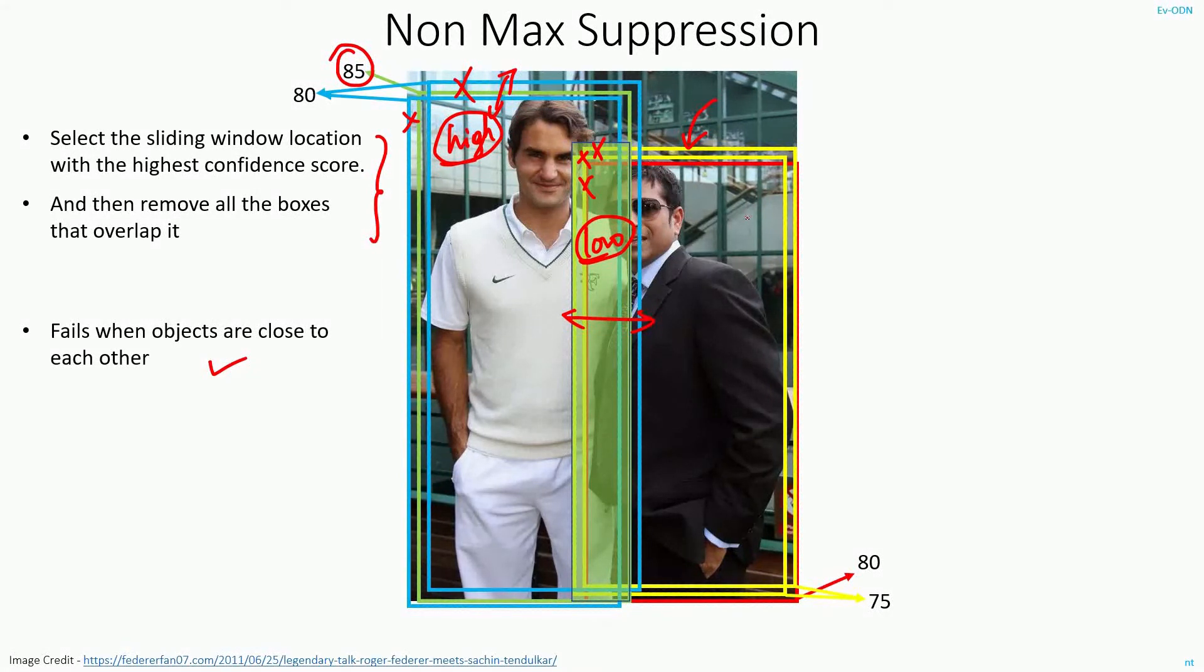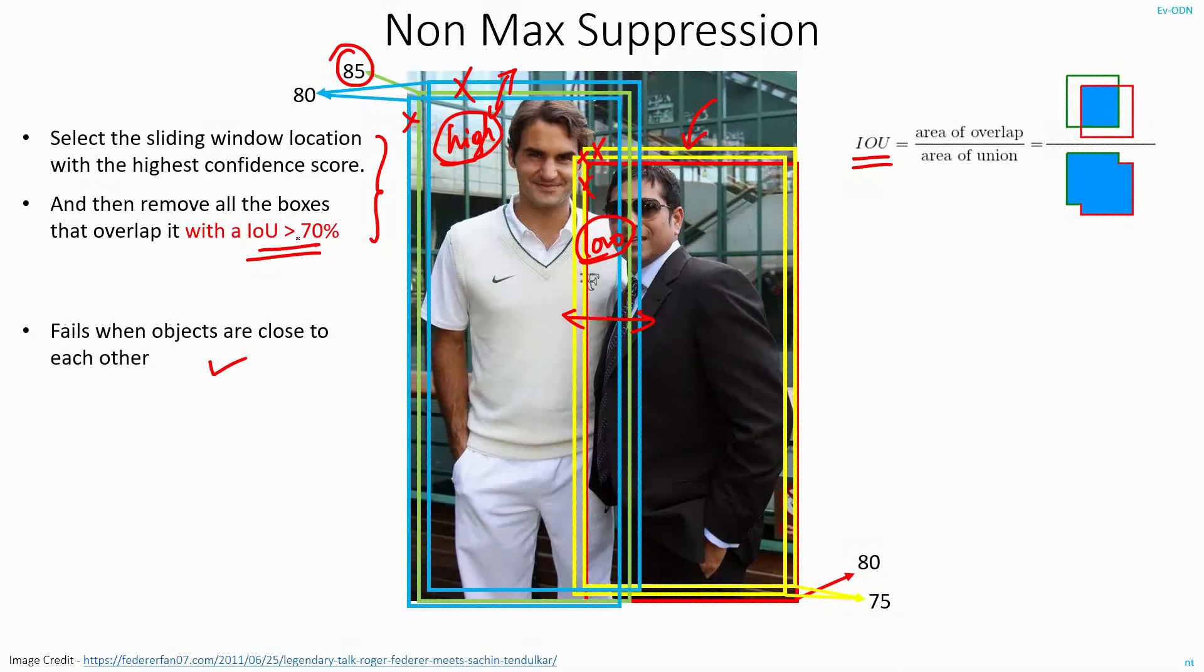Now, how do I mathematically measure how much is the overlap between two different bounding boxes? As we have already seen in the second chapter, I can use this metric called intersection over union. Now, what I will do, I will set a IOU threshold of 70% and repeat this algorithm.